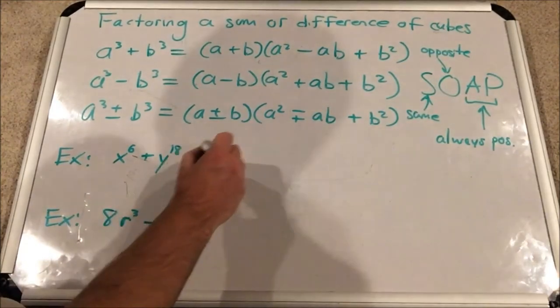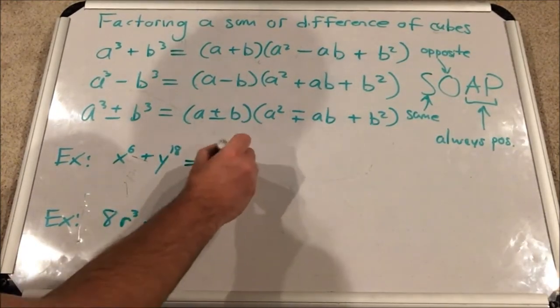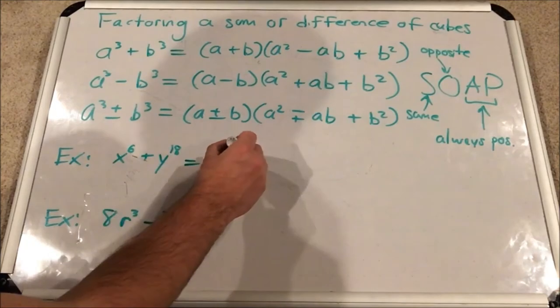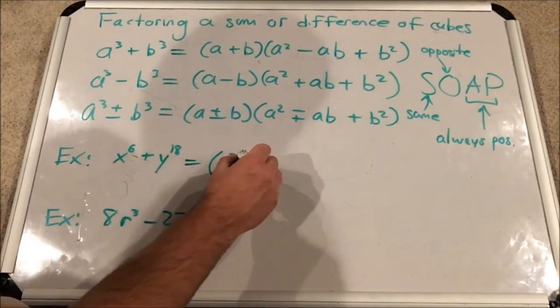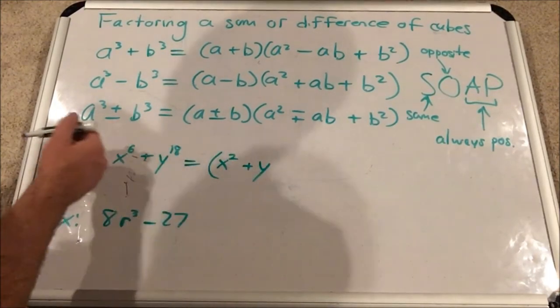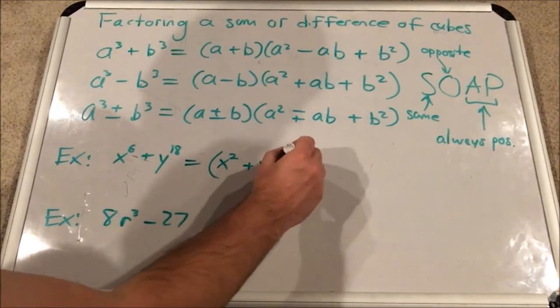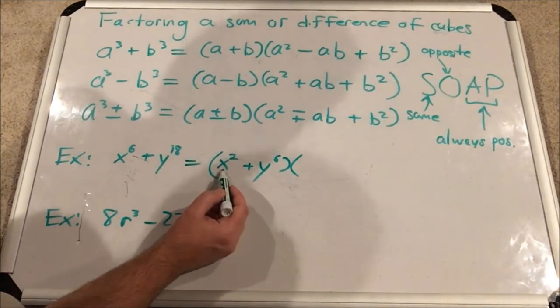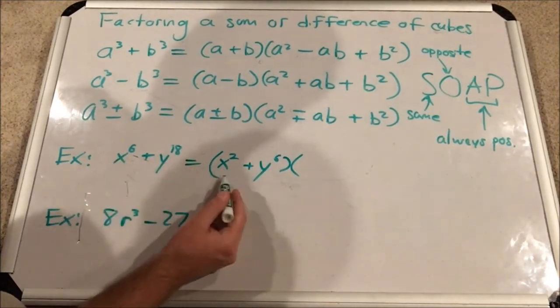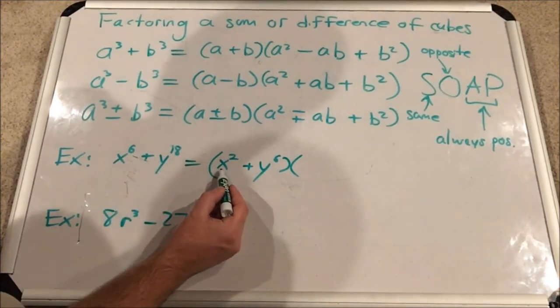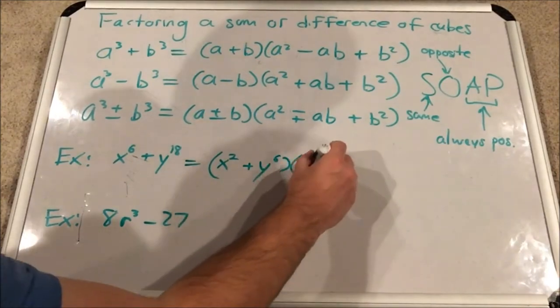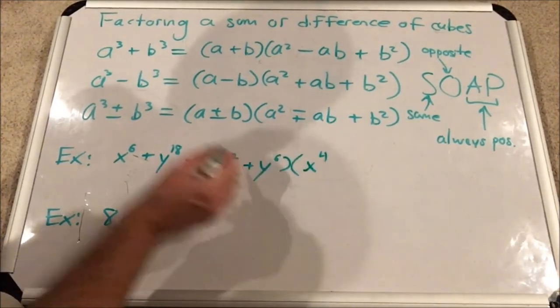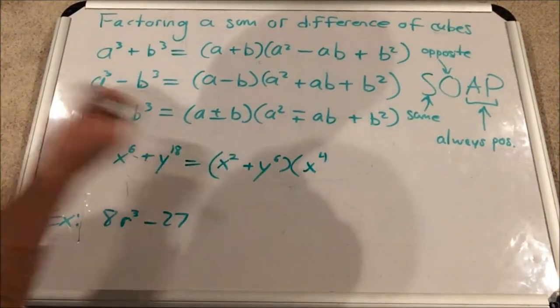So this would be equal to, in the first parenthesis, x, 6 divided by 3, x squared, plus y. What's 18 divided by 3? That would be 6. Then we multiply that by the square of the cube root of this term. So the square of this term, x squared squared, would be x to the 4th. Multiply those two exponents together.